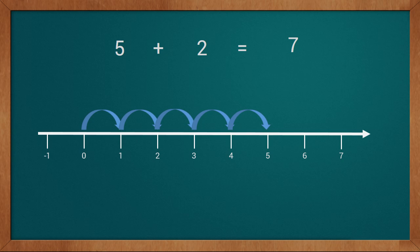Now we have to add or plus 2 to 5. For addition, we will move in the forward direction or in the right direction. We will start from 5 and move 2 points forward: 1, 2. This way 5 plus 2 equals 7. We reached 7. Our answer is 7.